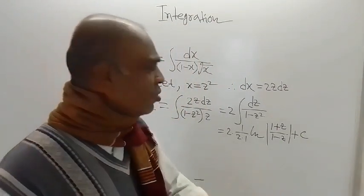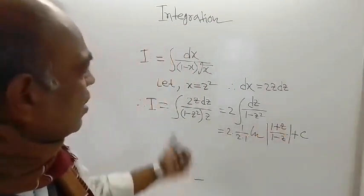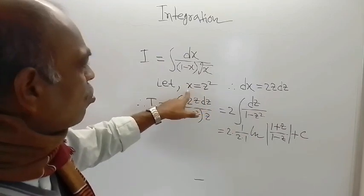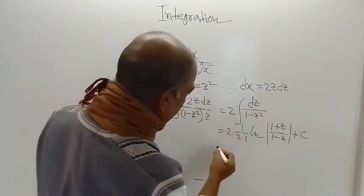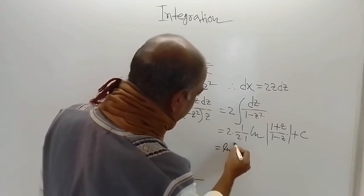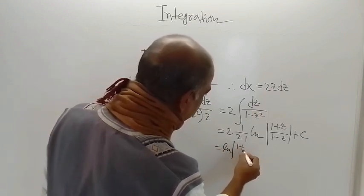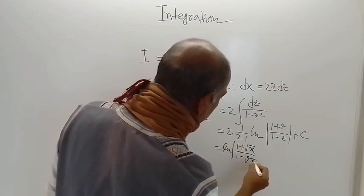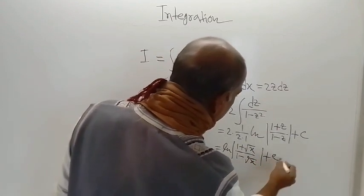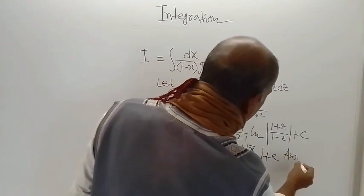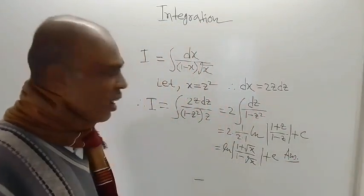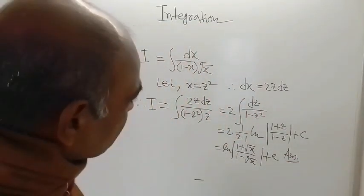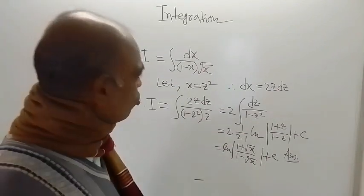Now just put the expression for z in terms of x, which is equal to root of x. So these 2 and these 2 are cancelled. Therefore, the remaining thing is log 1 plus root of x divided by 1 minus root of x plus c. And this is the answer to the given problem. You can see that the solution procedure was so easy and the length of the problem was so small.